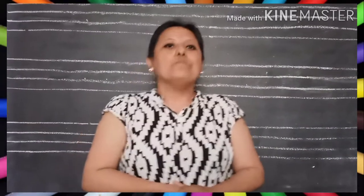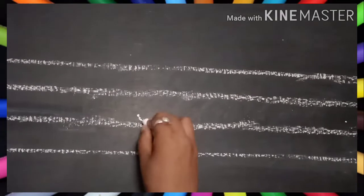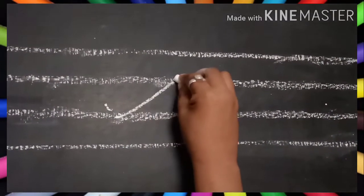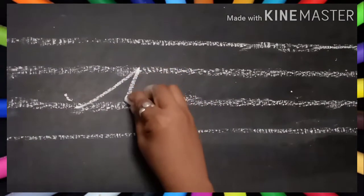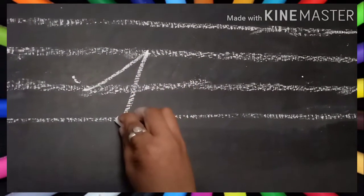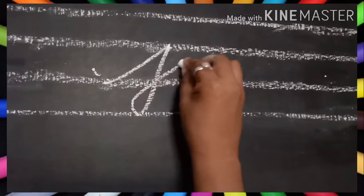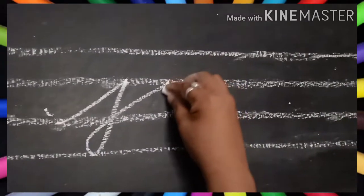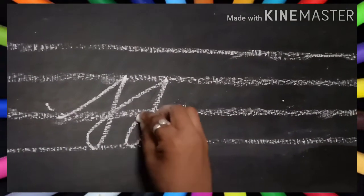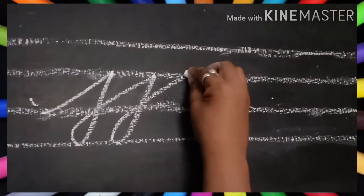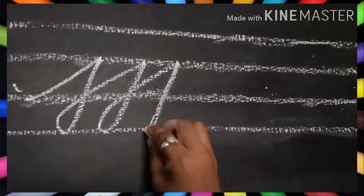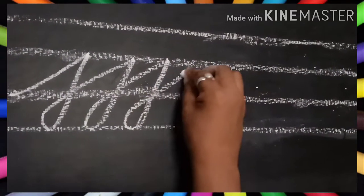So children, before writing cursive small letter 'j' — it goes like this. You have to start from the second middle line, touch the first middle line, and come back slantingly towards the bottom line. Again you will go up — see children, come slantingly, go up and touch the first middle line, again come back to the bottom line.